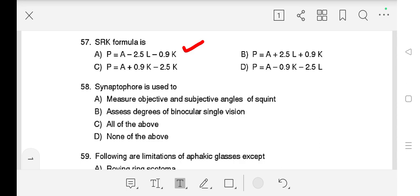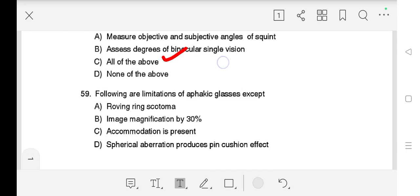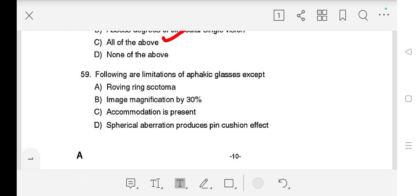Question number 58 is: Synaptophore is used to A) Measure objective and subjective angle of squint, B) Assesses degree of binocular single vision, C) All of the above, D) None of the above. Our right answer is C) All of the above. Question number 59 is: Following are limitations of aphakic glasses except A) Ring scotoma, B) Image magnification by 30 percent, C) Accommodation is present, D) Spherical aberration produces pincushion effect. Our right answer is C) Accommodation is present.